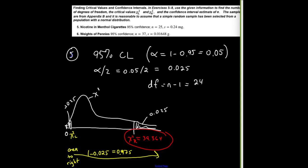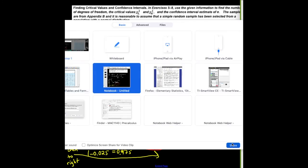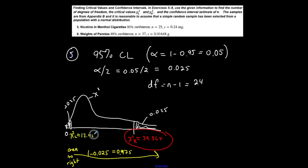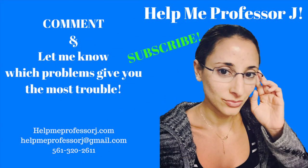So my left-tailed chi-squared critical value is approximately 12.401. I now have both critical values for a 95% confidence level with a sample size of 25: the left-tailed is 12.401 and the right-tailed is 39.364.